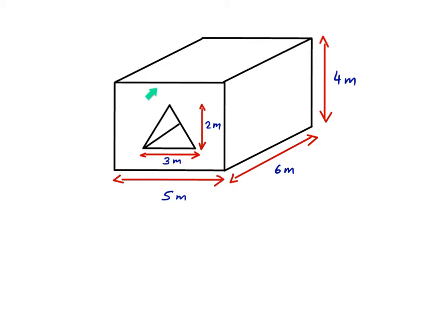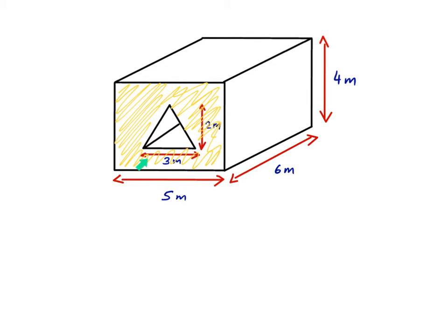Here we have another compound 3D shape — a cuboid that has a triangular prism missing in the middle. In order to work out the volume of this shape, all I need to do once again is work out the cross-sectional area and then multiply it by the width of the cuboid. To work out this shaded area, I work out the area of the entire rectangle: base times height, which is 5 times 4, equal to 20 square meters.